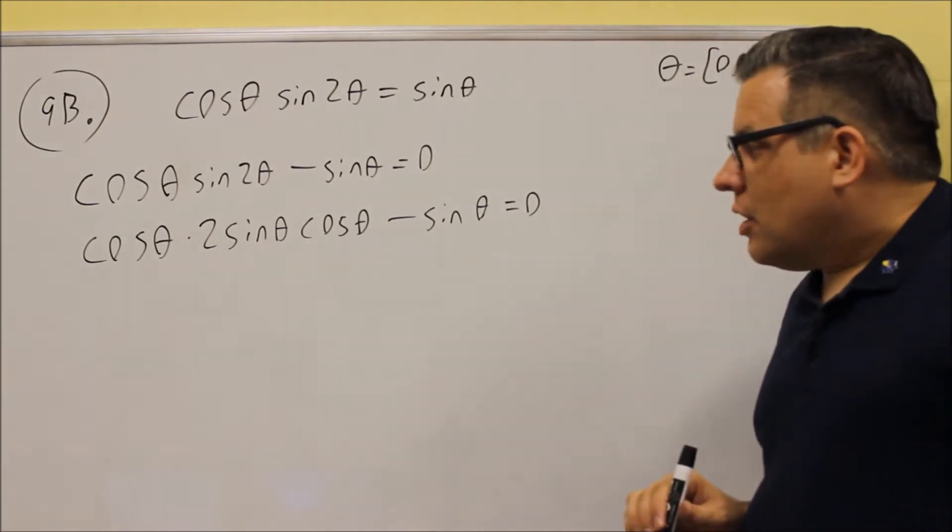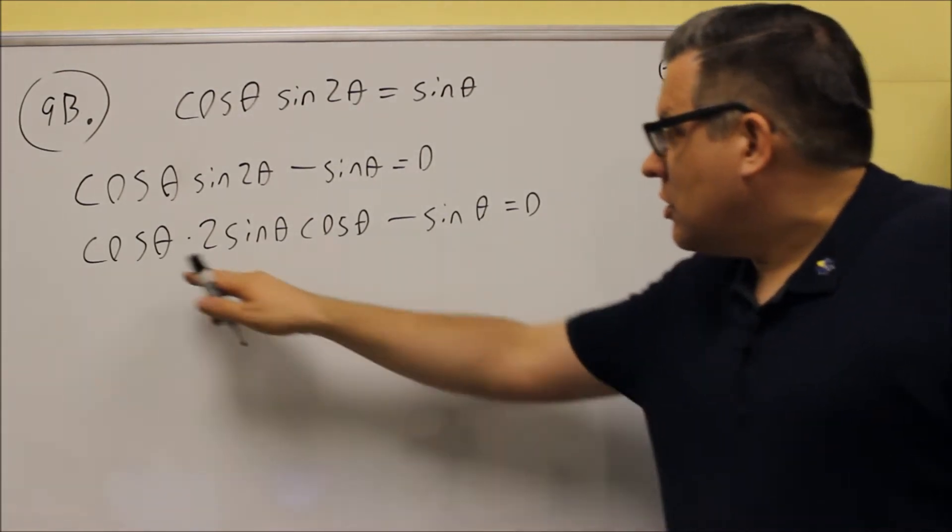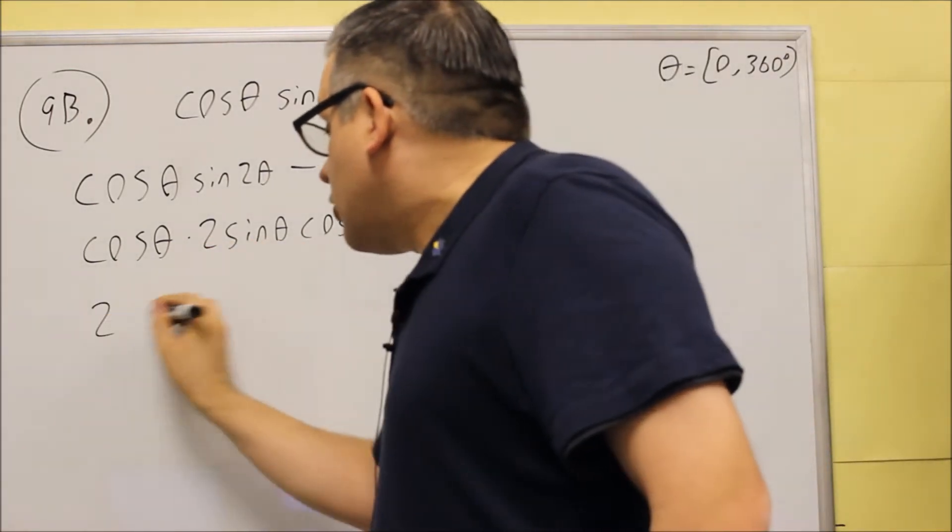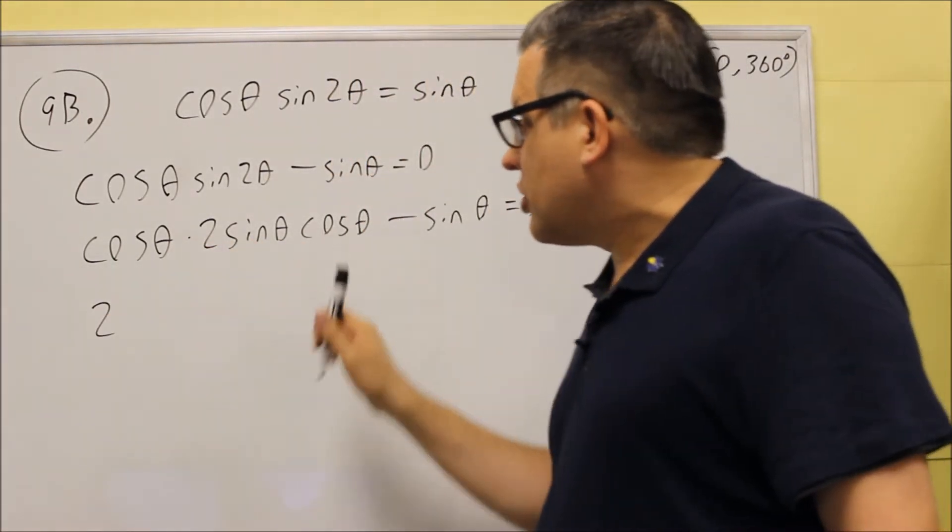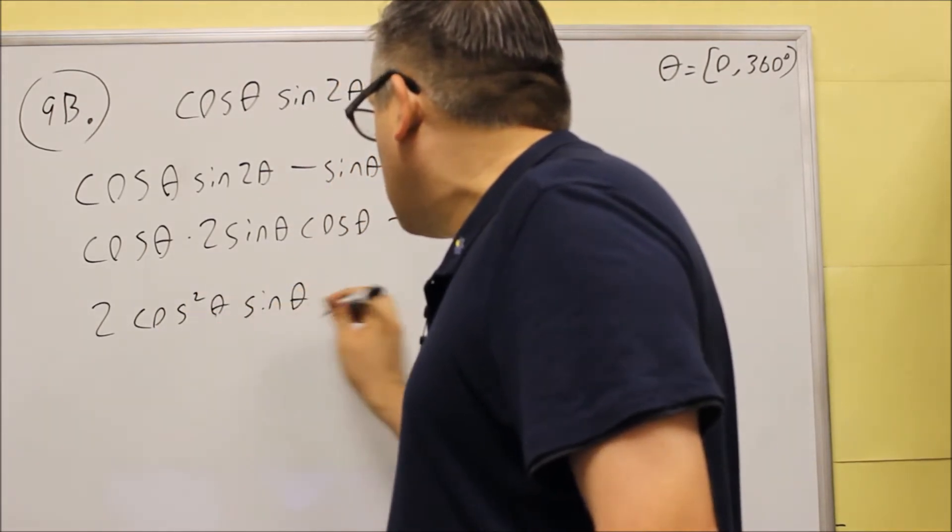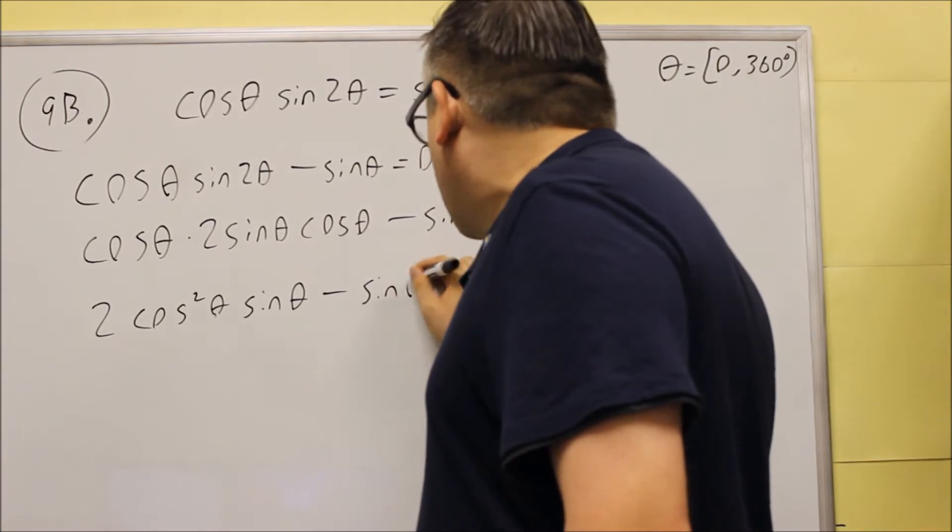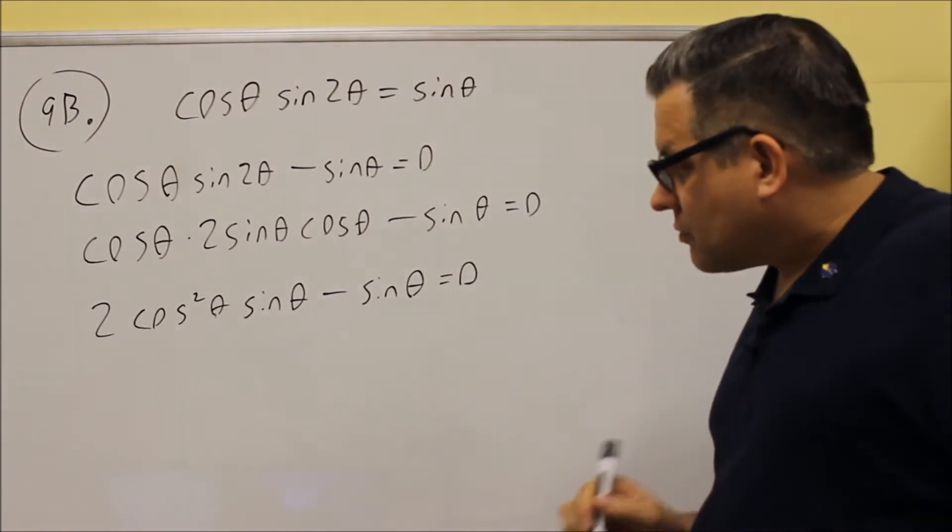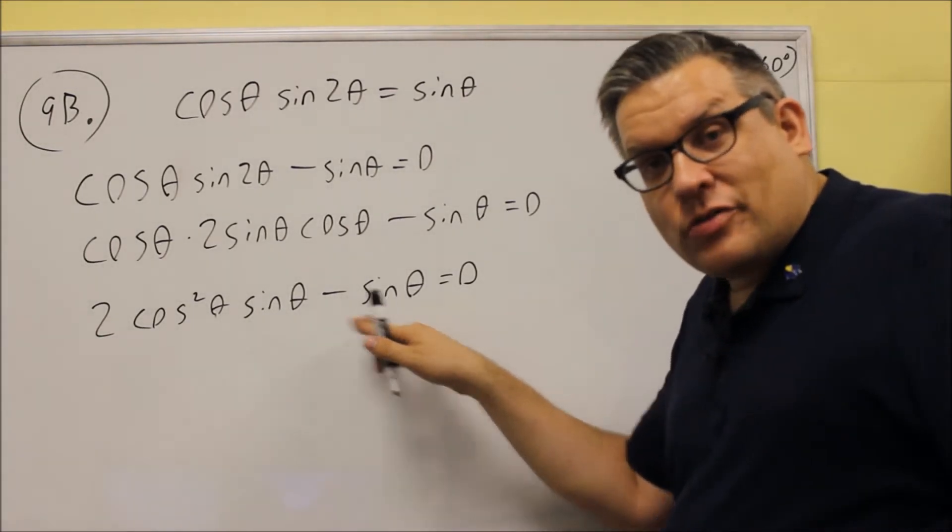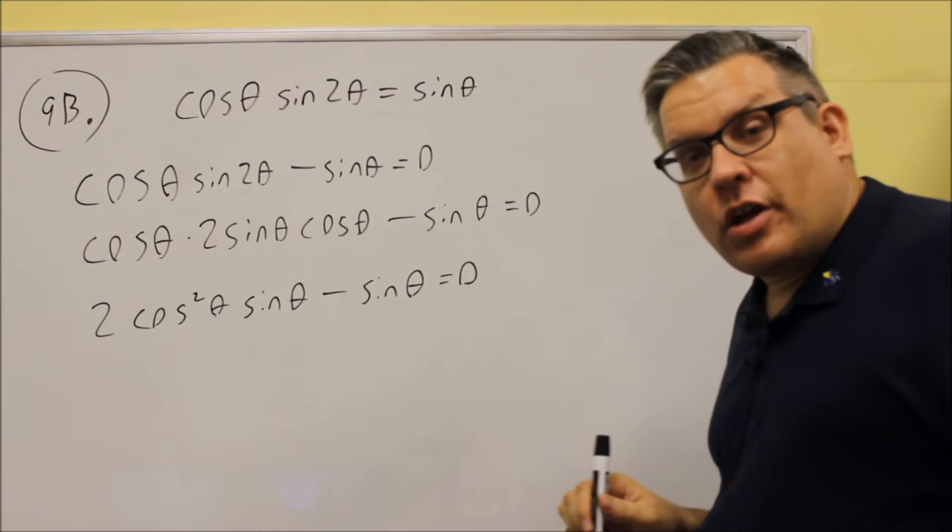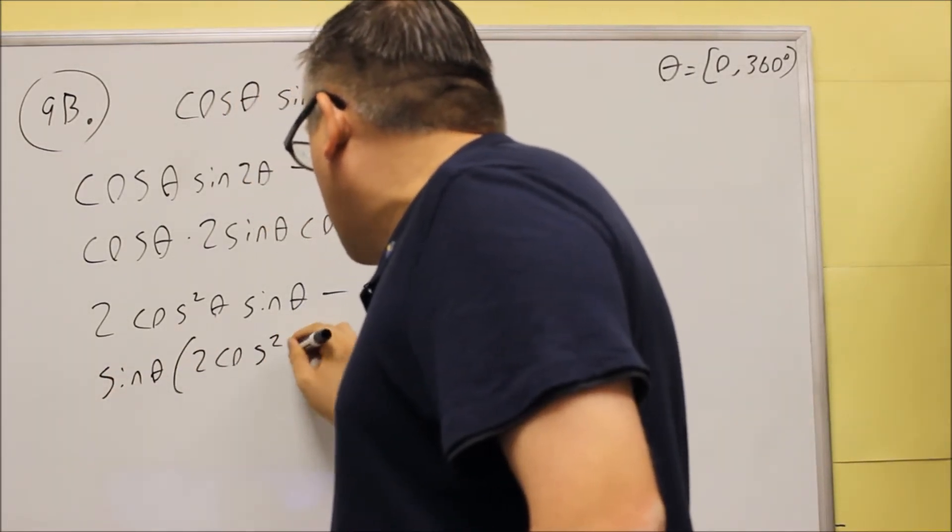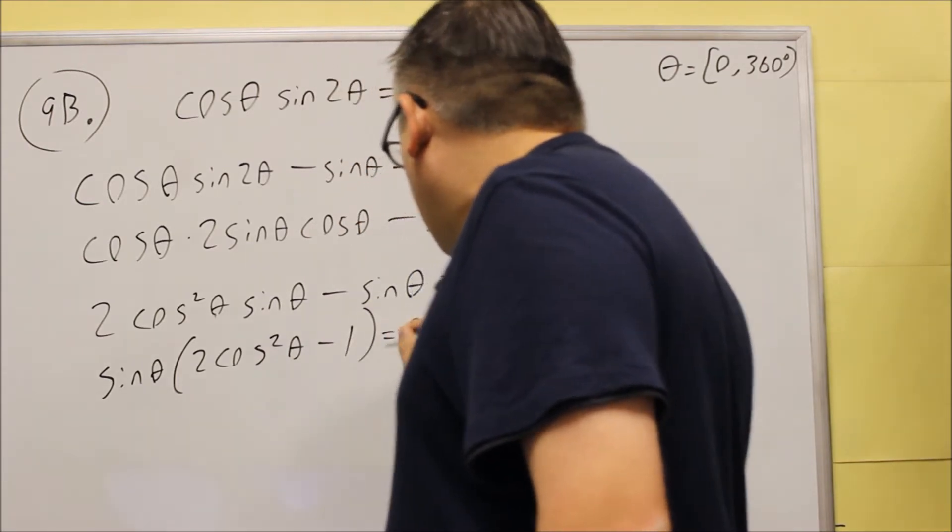So we're going to put this all in. Now because of that, let's clean it up first. We have a 2 we'll put on the outside. We have 2 cosines, so cosine squared theta, and then sine theta. And we have minus sine theta, that equals 0. So with this, you do have a common factor of sine for this one once we clean that up. Sine theta is going to come out. And we get 2 cosine squared theta minus 1 left over.